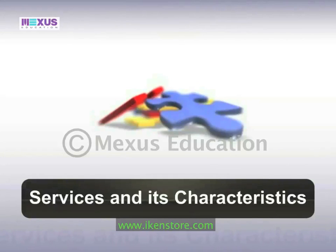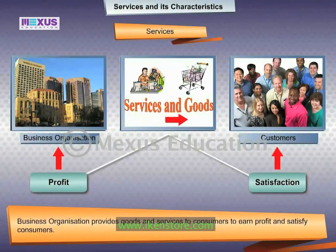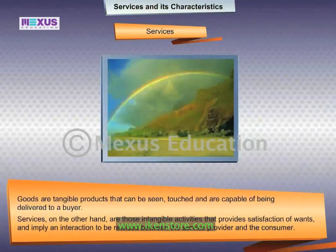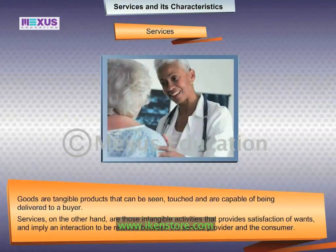A business organization produces and offers goods and services in order to earn profit as well as to fulfill the needs and desires of consumers. Goods are tangible products that can be seen, touched, and are capable of being delivered to a buyer. Services, on the other hand, are those intangible activities that provide satisfaction of wants and imply an interaction between the service provider and the consumer — for example, treatment by a doctor.